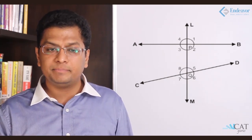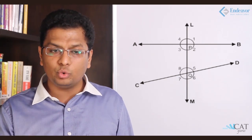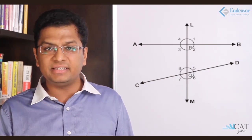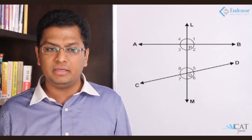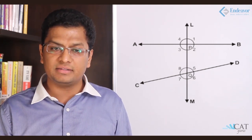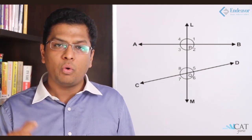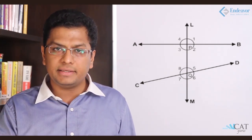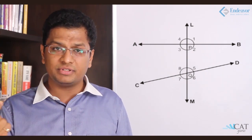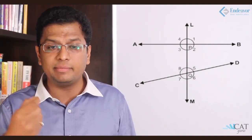Linear pair: on a given line, if two angles are formed by an intersection, such as angles 1 and 2 formed on line LM by the intersection of AB, they are a linear pair of angles. Vertically opposite angles — like angles 1 and 3 — are opposite to each other and are called vertically opposite angles.